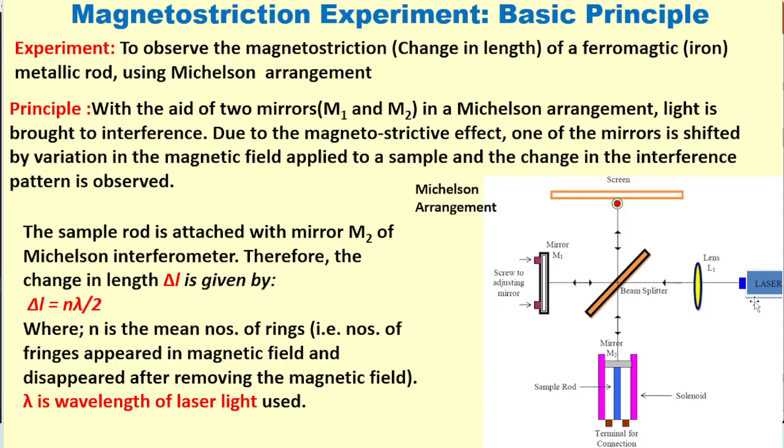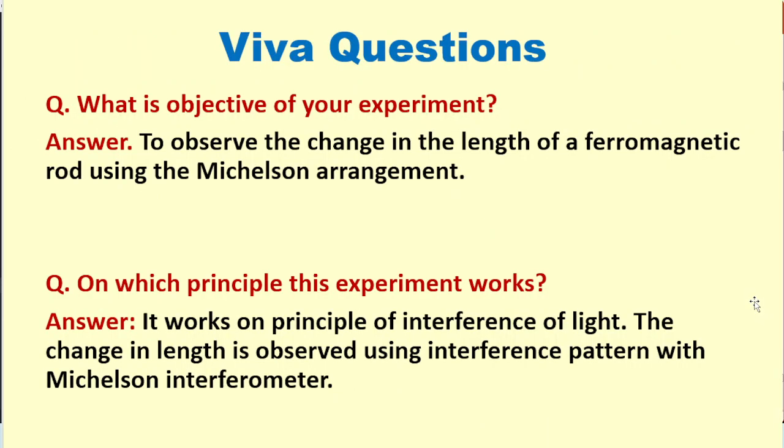Now there are some basic questions for viva. What is the objective of your experiment? It is to observe the change in the length of a ferromagnetic rod using the Michelson arrangement. On which principle does this experiment work? It works on the principle of interference of light, and the change in length is observed using interference pattern with Michelson interferometer.